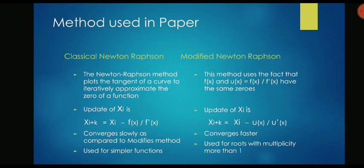In this case obviously there are a lot of iterations to be done and that too for each control point. So we need a fast converging method. The authors have come up with this modified method. They define a function u(x) is f(x) upon f'(x) and now the update of Xi is Xi minus u(x) upon u'(x).